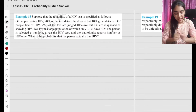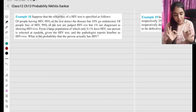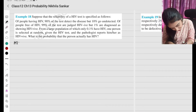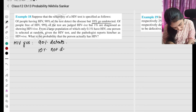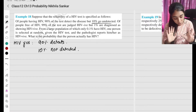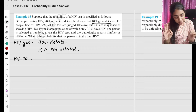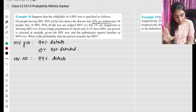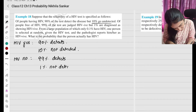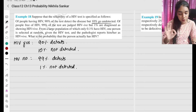Next question. Example 80: Suppose that the reliability of an HIV test is specified as follows. Of people having HIV, 90% of the tests detect the disease, while 10% go undetected. Of people free of HIV, 99% of the tests are judged HIV negative, and 1% are not detected correctly.